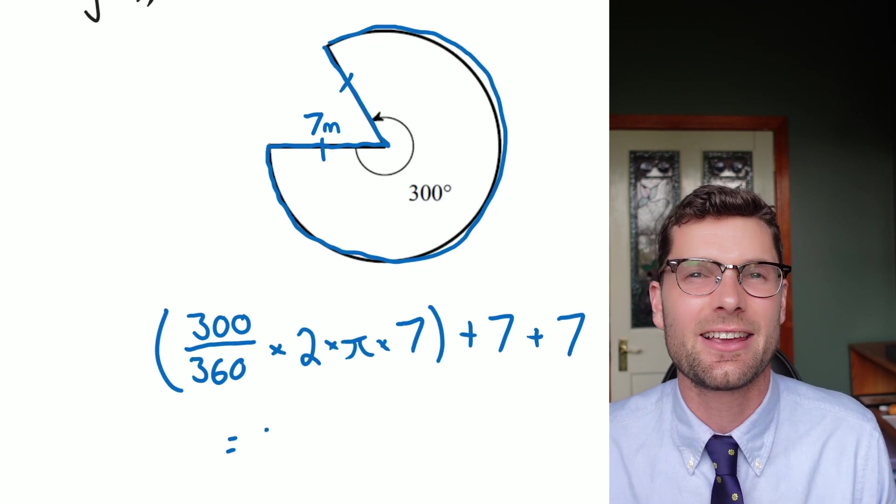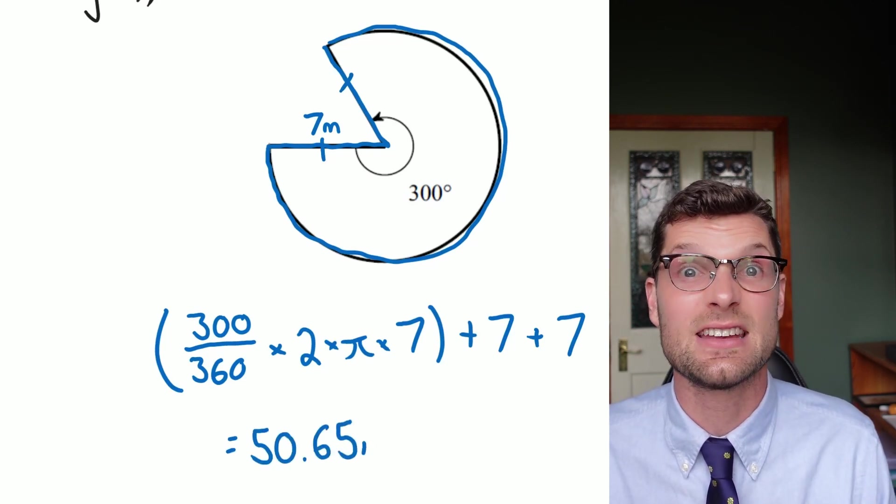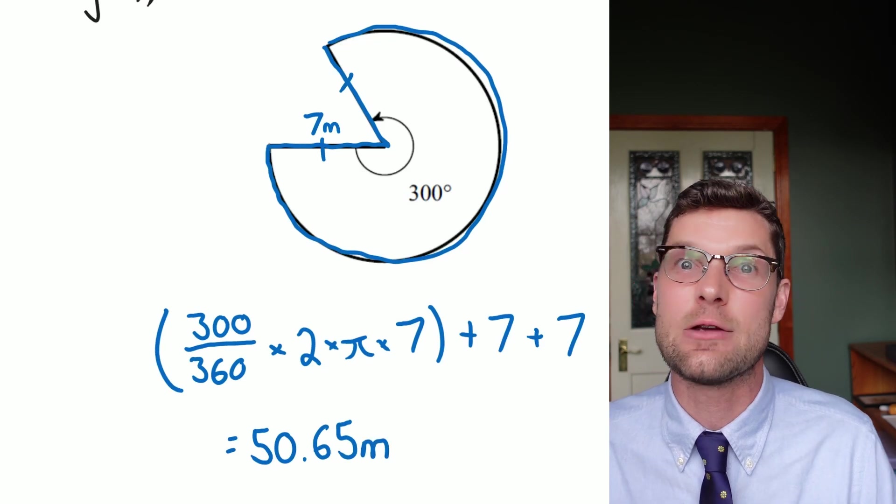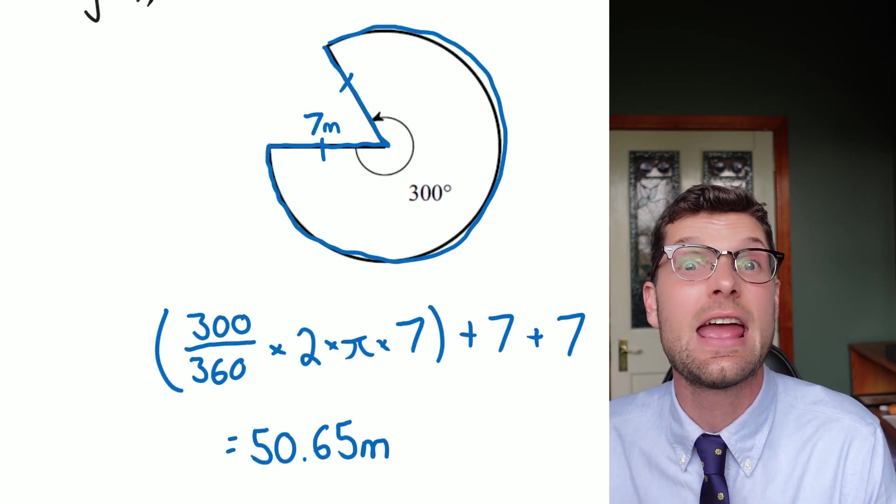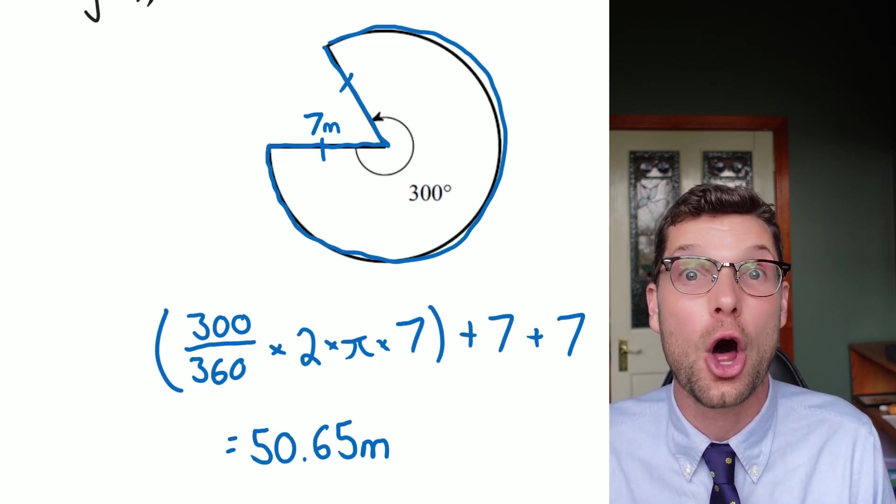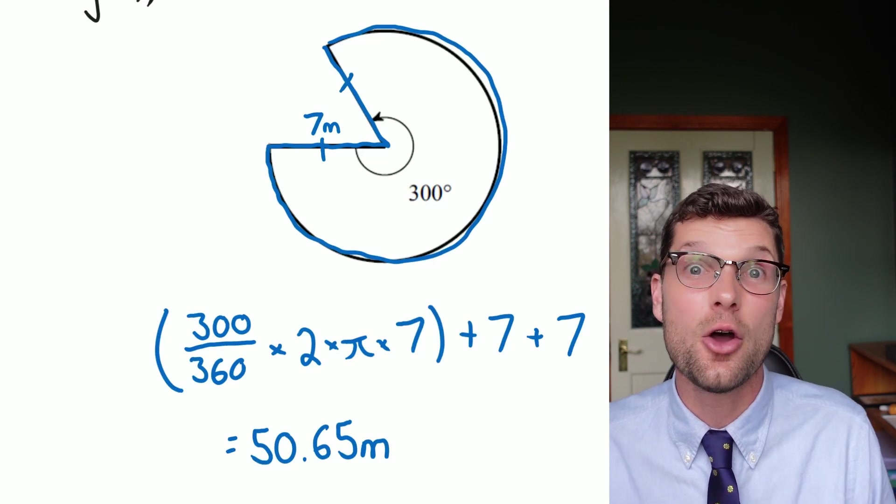So if I throw this into the calculator, I get the answer of 50.65, which again probably makes sense. The two sevens in this one would equal 14 meters, and because it's such a large section of the circle, it makes sense that the answer is a lot bigger than those two radii added together, so we know that we're probably on the right track.